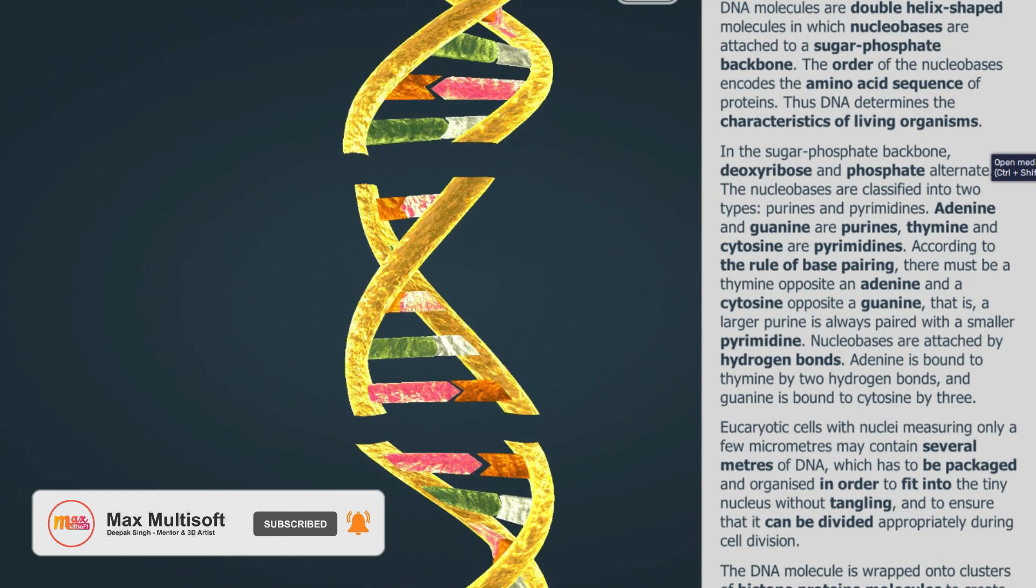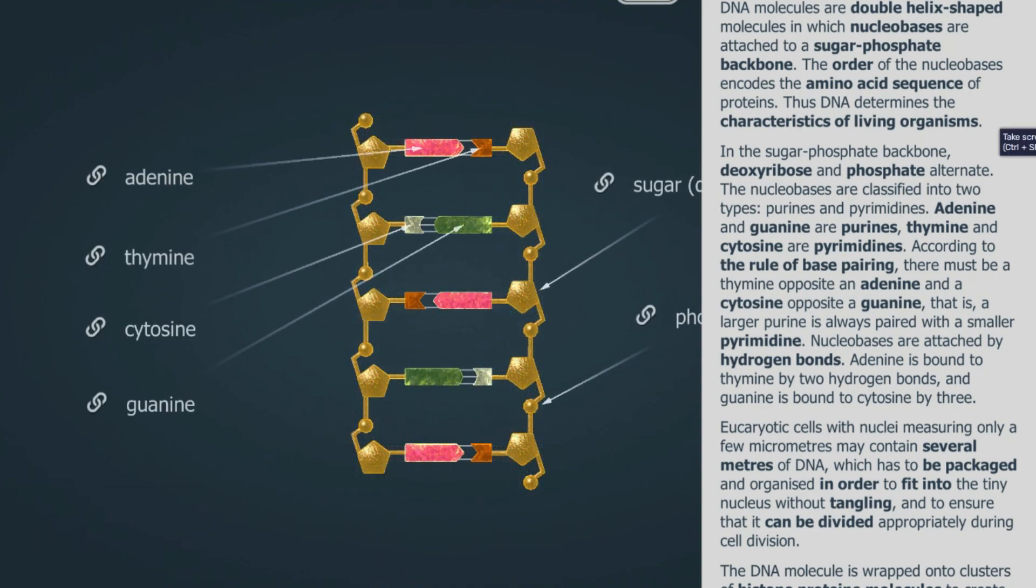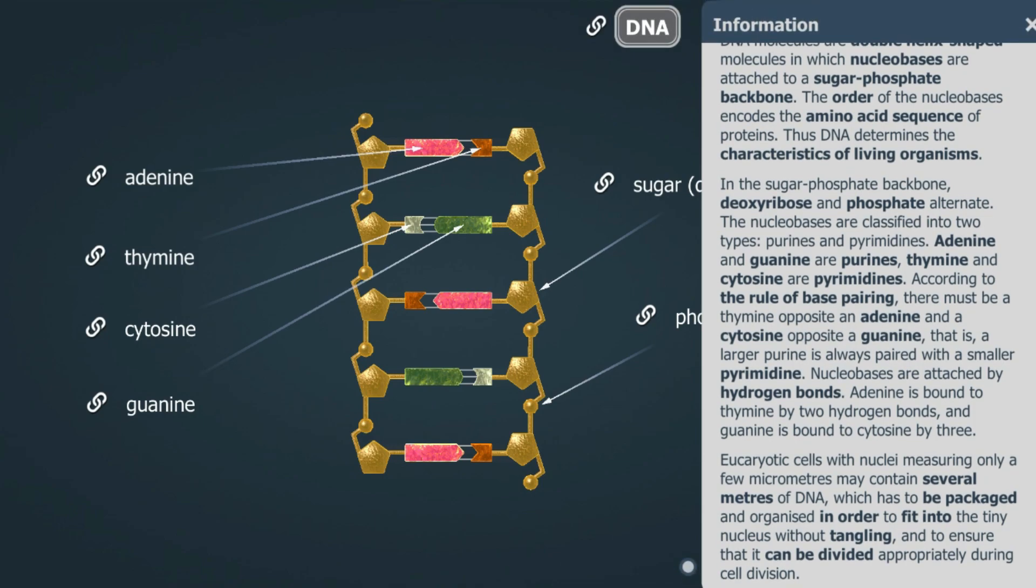In the sugar-phosphate backbone, deoxyribose and phosphate alternate. The nucleobases are classified into two types, purines and pyrimidines.